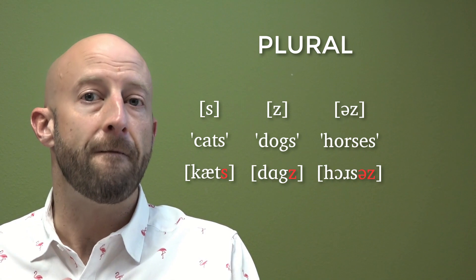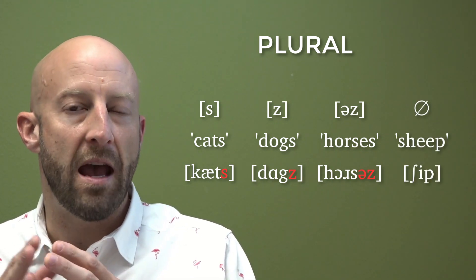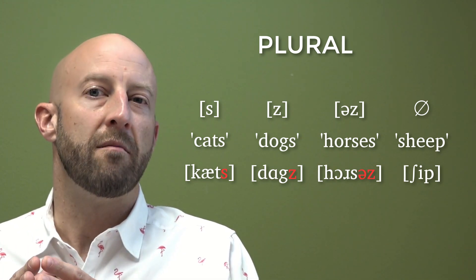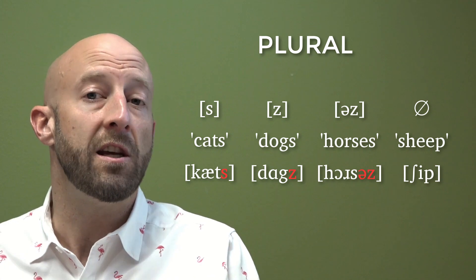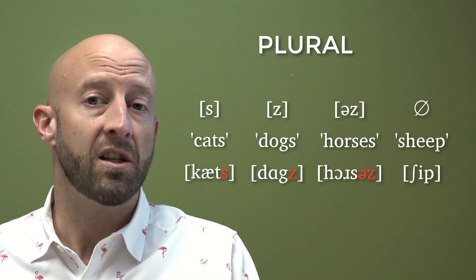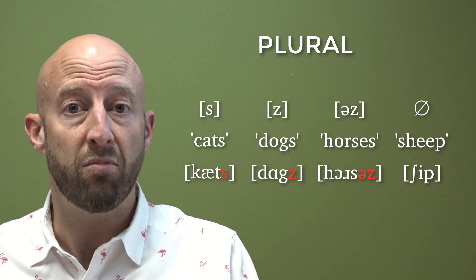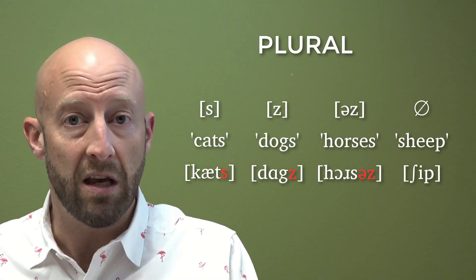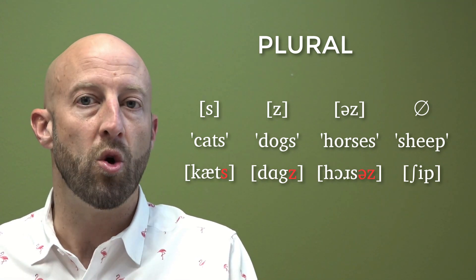But there is also a fourth, or what we call zero morph, allomorph for the plural. And this is unpredictable. This happens with some words here and there in English in which the form for the singular and the plural is the same. Such words include sheep, which is the same, one sheep or two sheep, you still say the same thing. Or moose, one moose, 20 moose, you're still saying the same word.